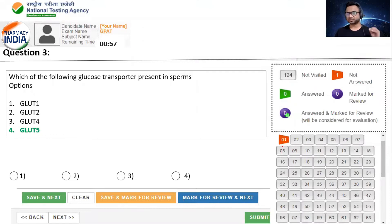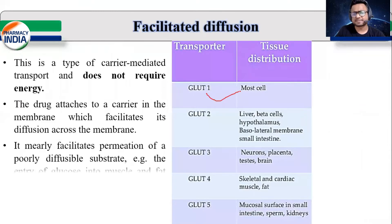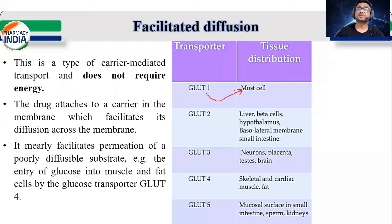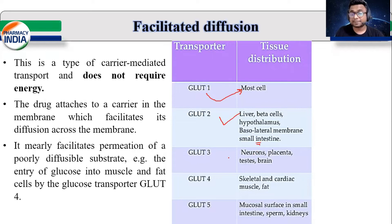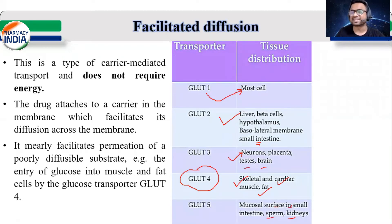It's Glute 5. Glute 5 जो transporter है वो specifically sperms के अंदर होता है. Glute 1 is present in most of the cells. Glute 2 specially located in liver cells, specially beta cells, hypothalamus, basolateral membrane and small intestine. Glute 3 present in neurons, placenta, testis, endocrine. Glute 4 is located in skeletal, cardiac and fat cells. और यहां पर हमारा insulin mainly काम करता है. Glute 5 is located in sperms, kidney and mucosal surface in small intestine. That's why option D is correct answer, that is Glute 5.